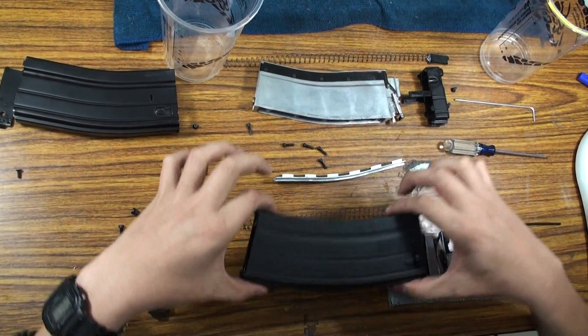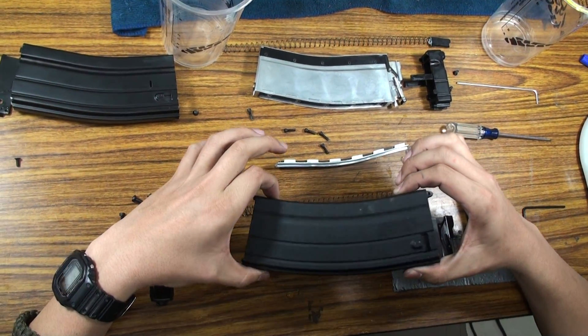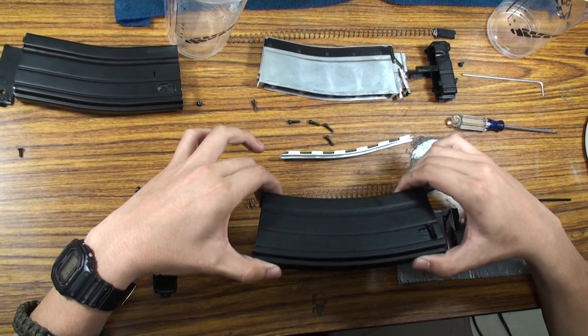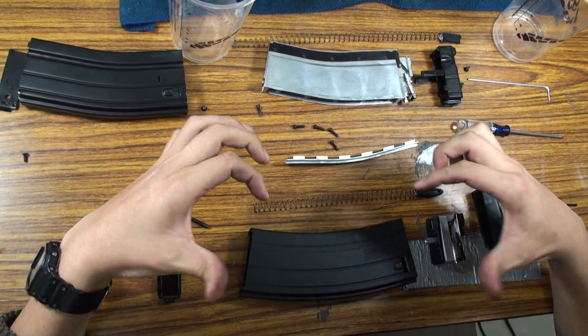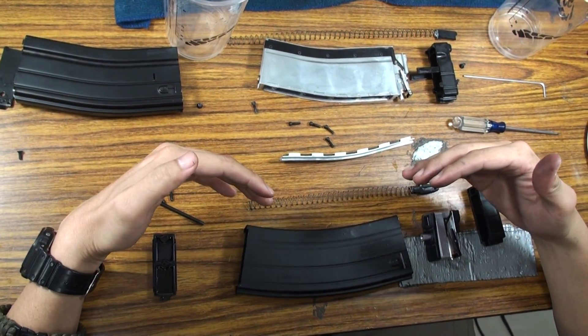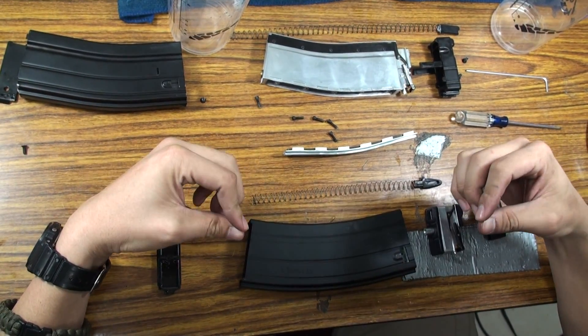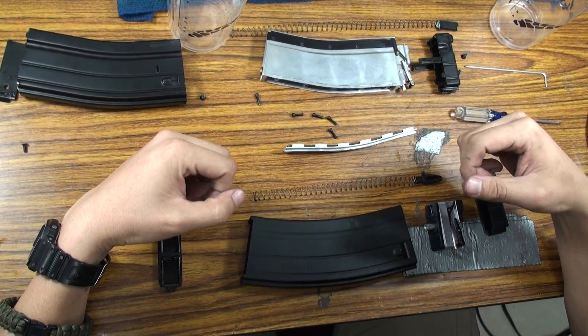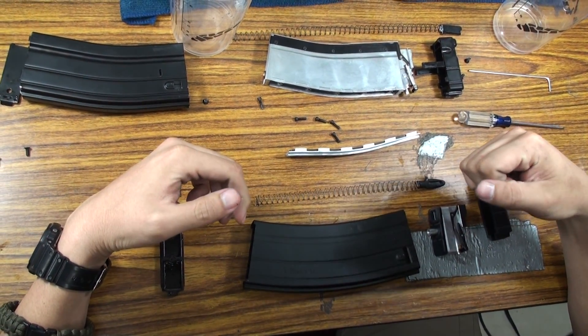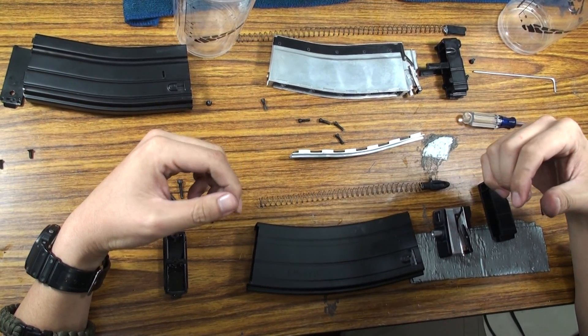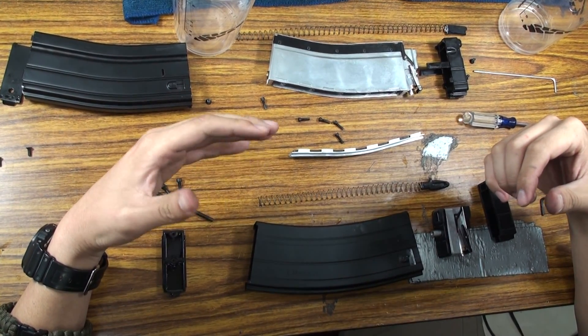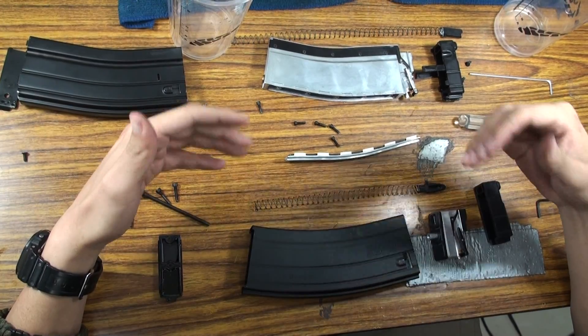This is the new version of the VFC HK416 magazine. It's GBB, and we tested it before—filling it with green gas, it fires 77 rounds in full auto mode. It's amazing, so it comes to our mind: how can it do that?